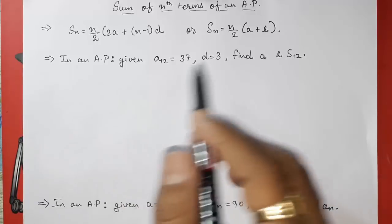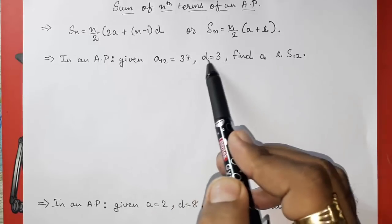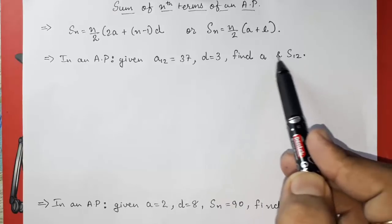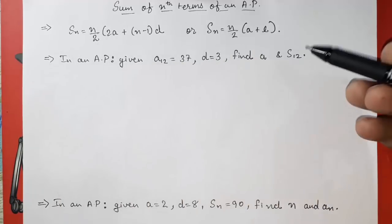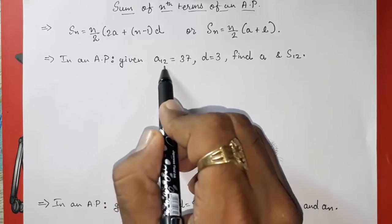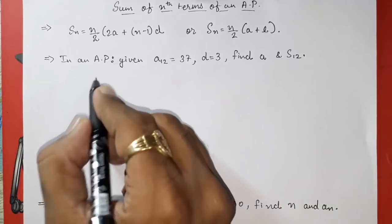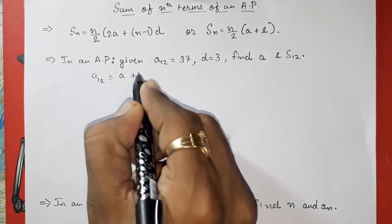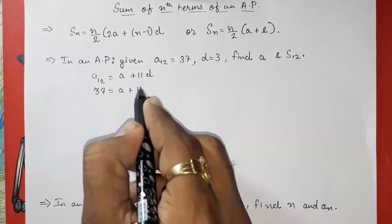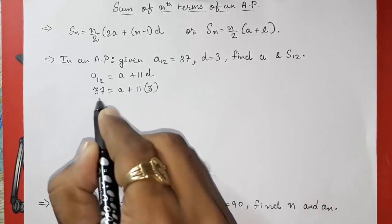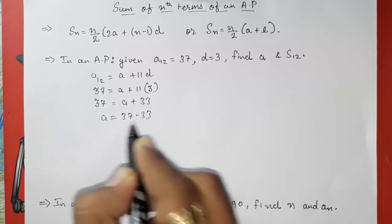Now one by one I am going to solve different types of sums. In the first type, they will directly give you numbers like a₁₂ = 37, d = 3, and ask you to find a and S₁₂. We are given a₁₂ and d, and we need to find a. Using our previous formula, a₁₂ = a + 11d. Putting in values: 37 = a + 11×3, so 37 = a + 33.